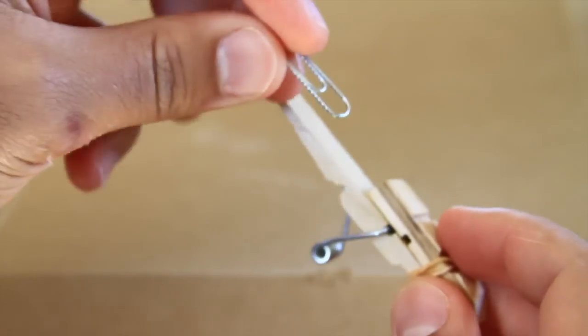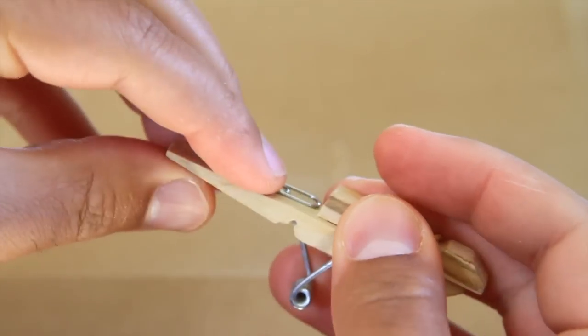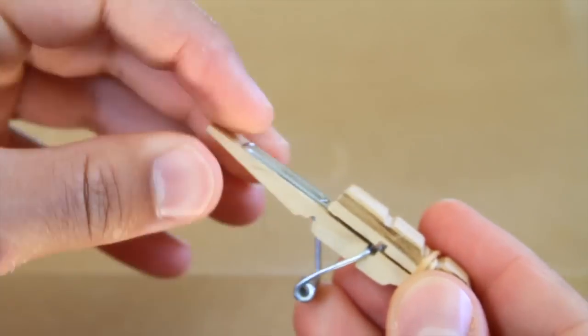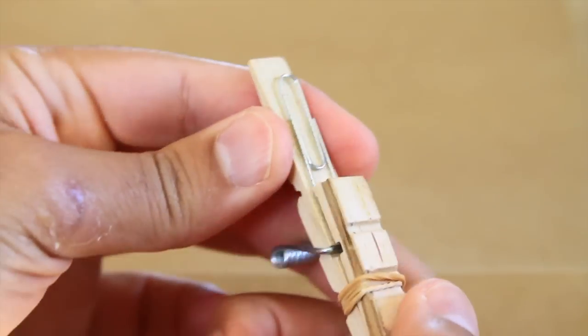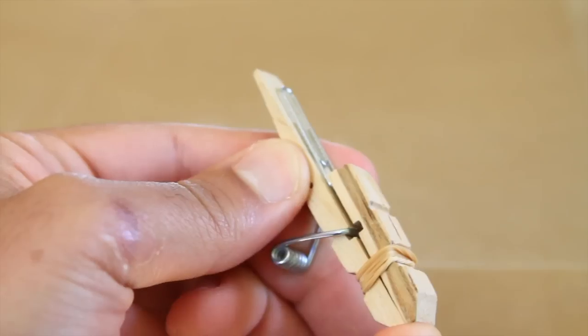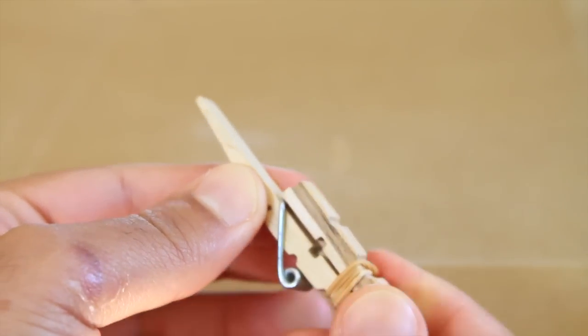With the gun cocked back, you use the paper clip to load the gun. Place part of the paper clip under the top wooden piece. Point the gun away from you or anyone else and pull the trigger. The paper clip will go flying like a bullet.